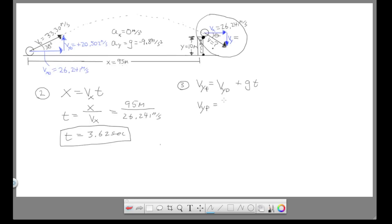Vy final is going to be equal, so we plug in Vy initial, 20.502 meters per second plus negative 9.8 meter per second squared. And then our time to the wall is 3.62 seconds. So this gives us Vy final equal to negative 14.974. Okay, so let's put that up here. Negative 14.974 meters per second.